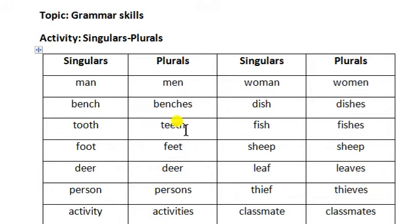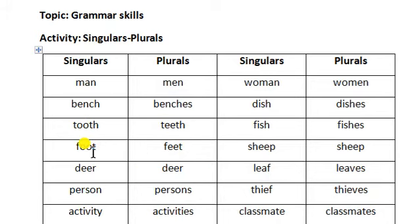Tooth becomes teeth, and foot becomes feet. The double O changes — this is the same pattern: foot becomes feet. These are irregular plurals where the vowel changes rather than adding a suffix.